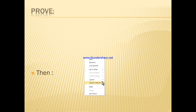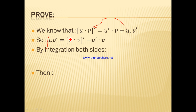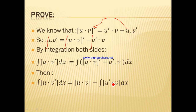Now let me do the proof. We know that (u·v)' equals u'·v plus u·v'. Taking u·v' to one side gives u·v' equals (u·v)' minus u'·v. Integrating both sides, the antiderivative of (u·v)' is u·v, so we get: integral of u·v' dx equals u·v minus integral of u'·v dx.